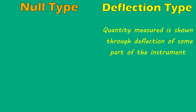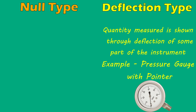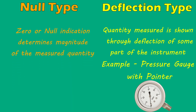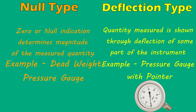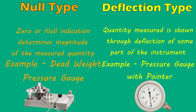Null type and Deflection type instruments. Deflection type instruments are those where the quantity being measured is shown through deflection of some part. An example is a pressure gauge which displays pressure through deflection of the pointer. Null type instruments are those where a zero or null indicator of the pointer determines the magnitude of the measured quantity. An example is a dead weight pressure gauge, where we keep on putting weights till the piston reaches the reference point, and once it reaches, the total weight put on is the pressure of the fluid.